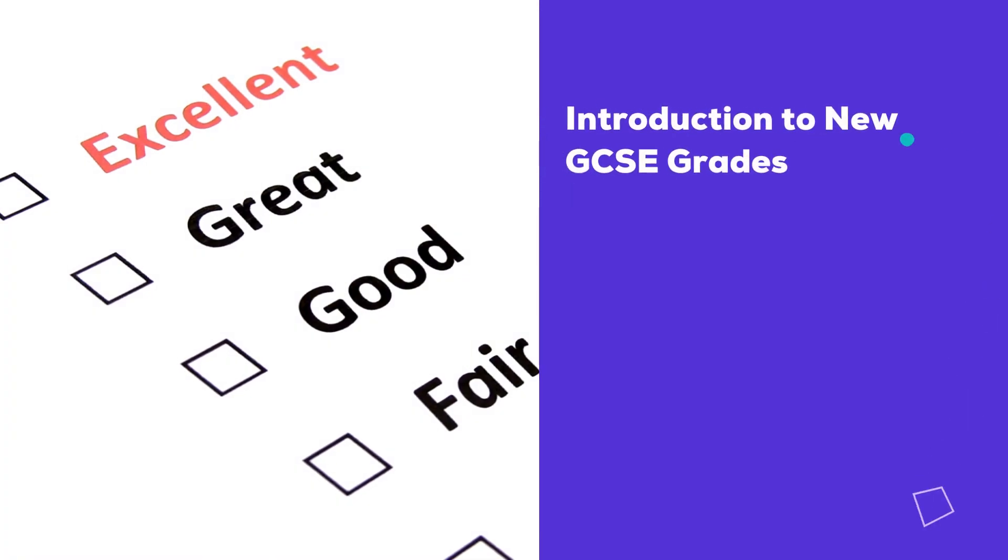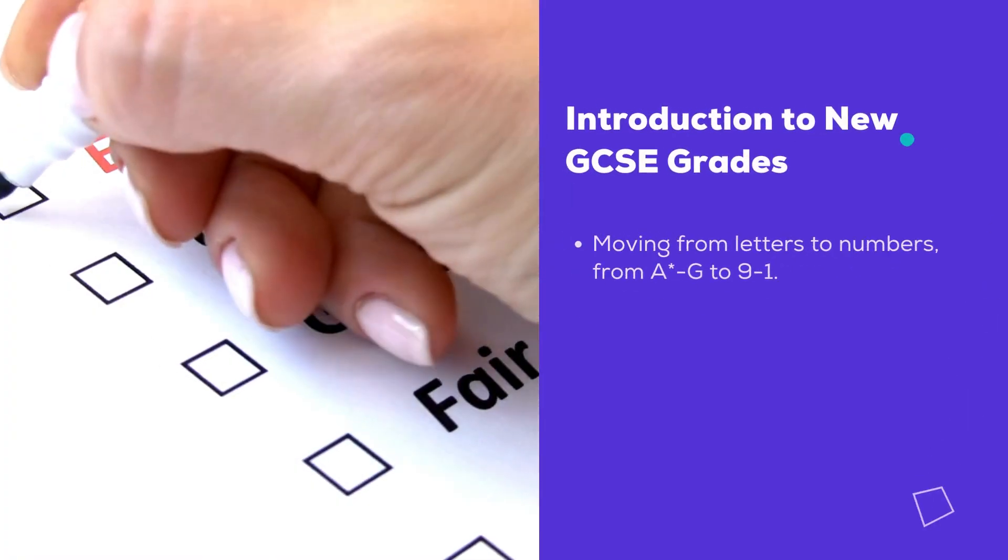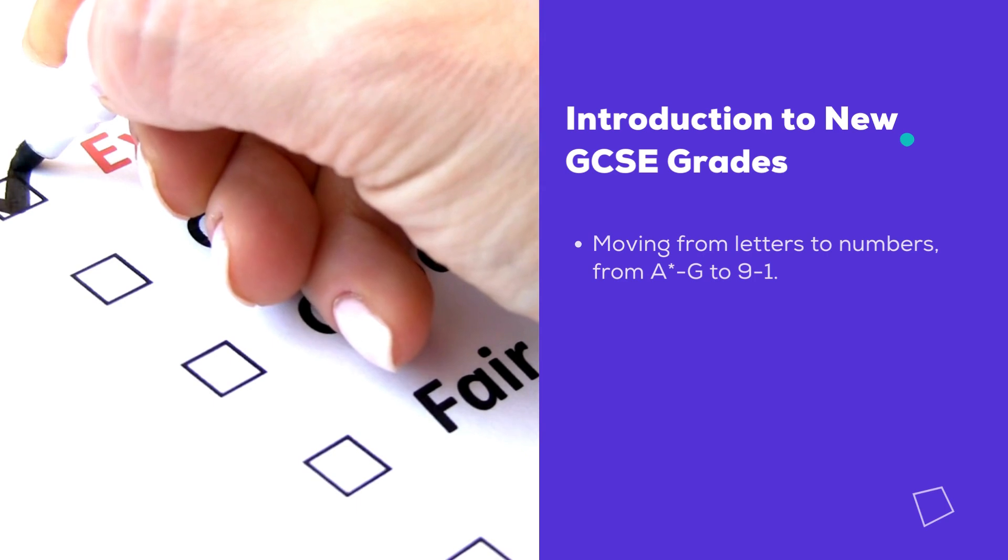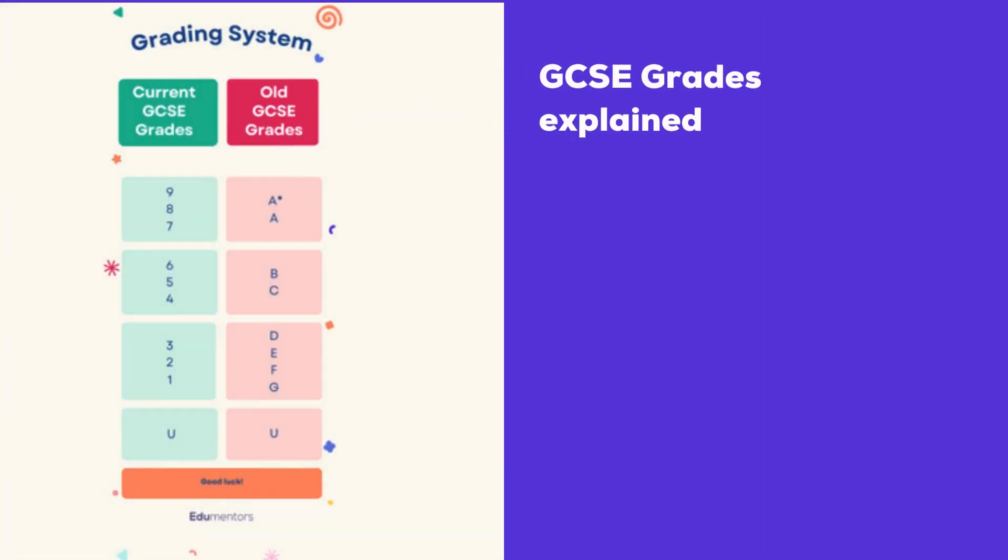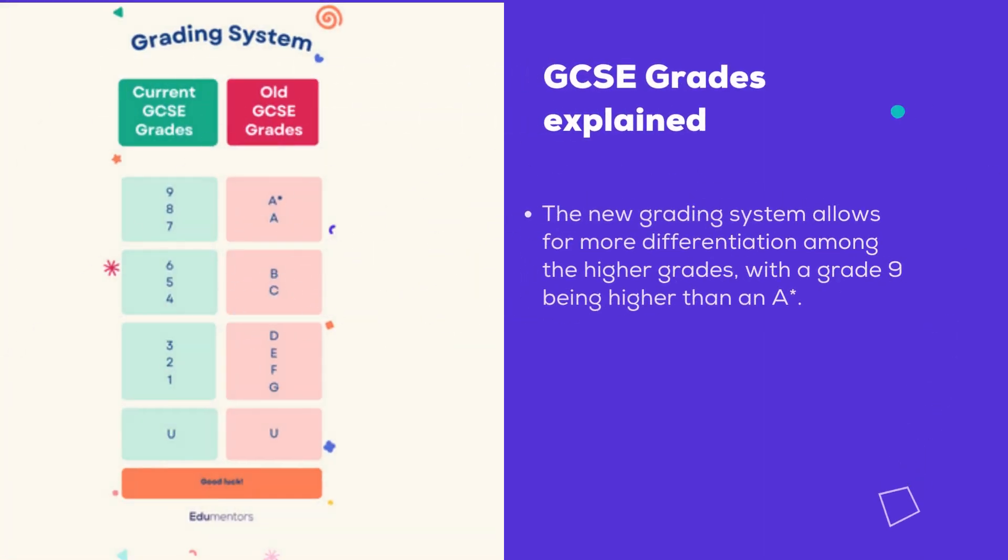Introduction to new GCSE grades: moving from letters to numbers, from A* to G to 9 to 1, for more clarity and to challenge students further. GCSE grades explained: the new grading system allows for more differentiation among the higher grades.